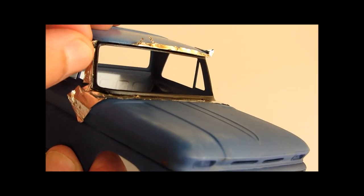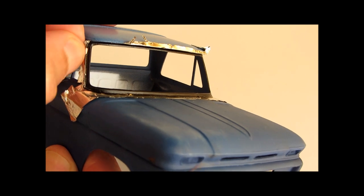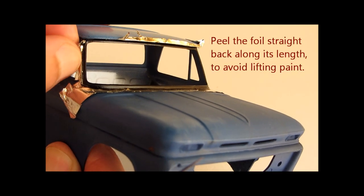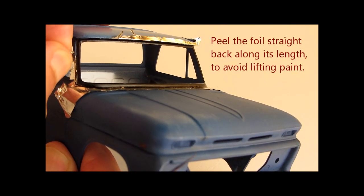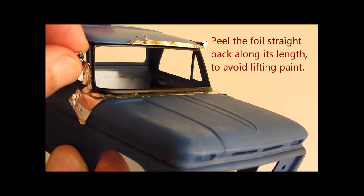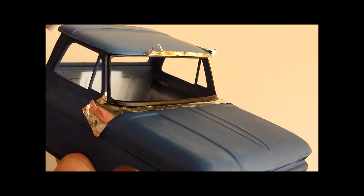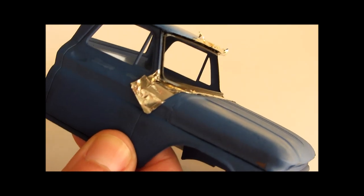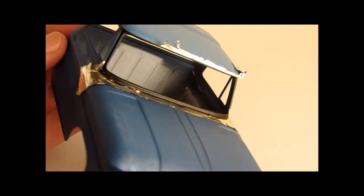Get a hold of one end and just peel it back along its length. That will help it to lift up nicely without taking any of the paint with it. Now you've got a really nice sharp line there between the black and blue.